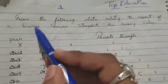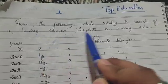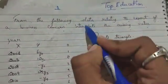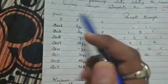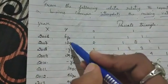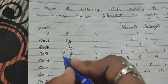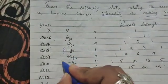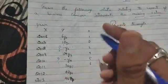Let's begin. The question: From the following data relating to export of a business concern, interpolate the missing value. We have to interpolate the missing value by using Pascal's triangle. Here the question is: we have 2006, 2007, 2008, 2009, 2010, 2011, 2012, 2013, and here we have 6, 12, question mark, 24, question mark, 36, 42, 48.